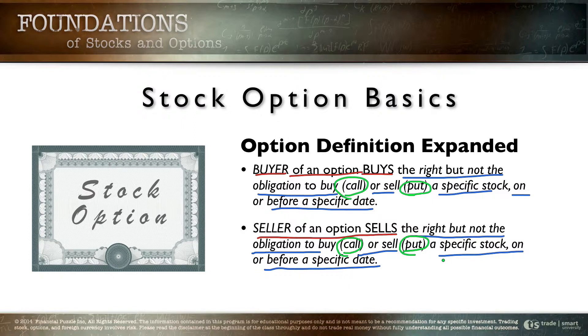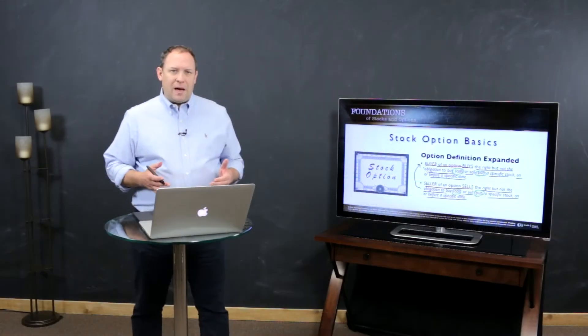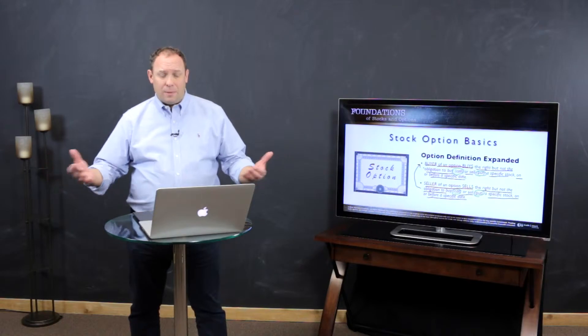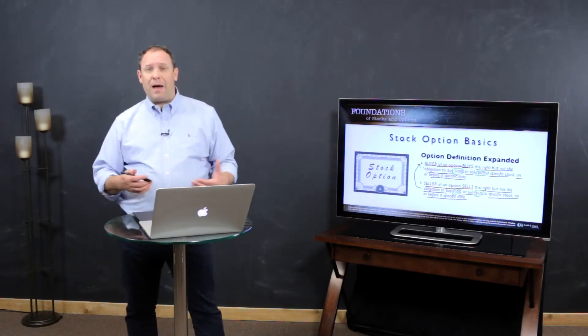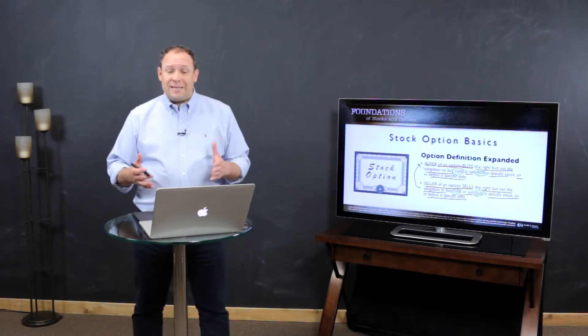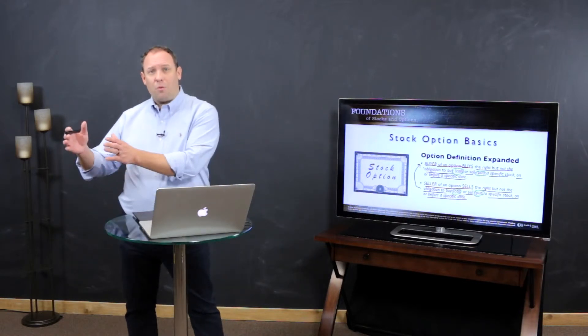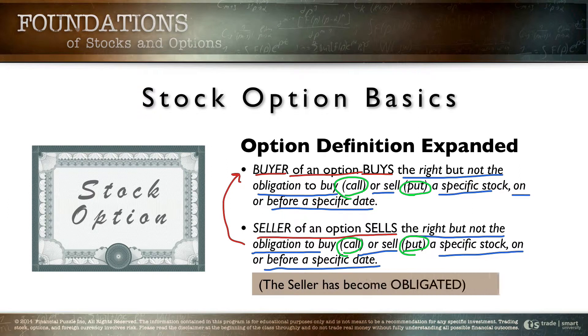The seller is selling the option to the buyer. The buyer gets all the rights — they've purchased the right but not the obligation to buy or sell a specific stock at a specific price on or before a specific date. The seller, having given the buyer the right, becomes obligated — obligated to the buyer. So the buyer gets all the rights and the seller takes on all the obligation of that option contract. Two types of options: calls and puts. Two sides: the buyer and the seller.